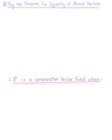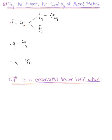Looking at the matching components: F equals phi_x, G equals phi_y, and H equals phi_z. Starting with F, which is the partial derivative of phi with respect to x, we differentiate with respect to the other variables y and z. So the partial derivative of F with respect to y equals phi_xy, and the partial derivative of F with respect to z equals phi_xz.